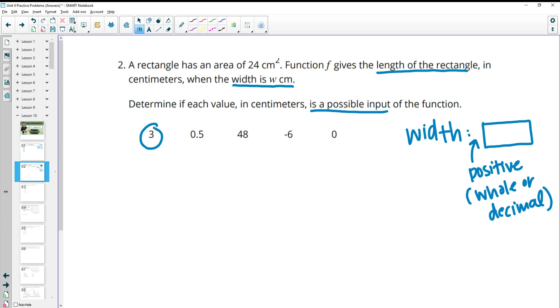So three is fine. Half a centimeter is fine. 48 centimeters is fine. We cannot have negative six as a width measurement and we cannot have zero as a width measurement. Otherwise, we wouldn't have a rectangle.